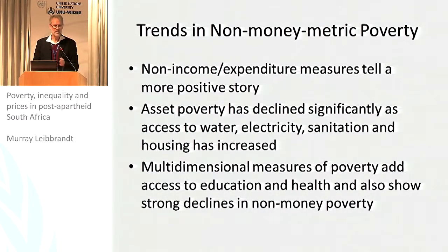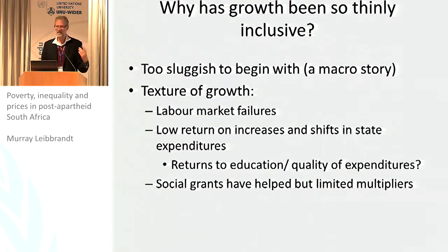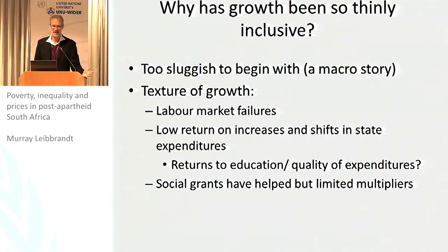Given the non-money metric improvements and the income story, how do you reconcile the two? How has income growth been so thinly inclusive? There are all sorts of stories. One is that growth is too sluggish to begin with — 3.2% is just not enough. Most planning models used in South Africa call for 6%, but obviously you can call for whatever you like; that doesn't make it happen. We're short of the kind of momentum we're looking for.